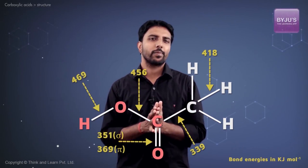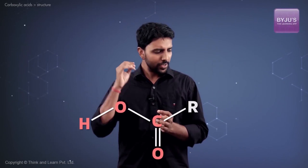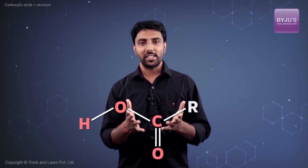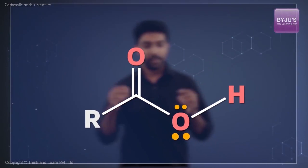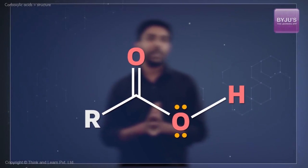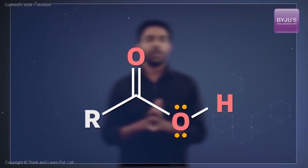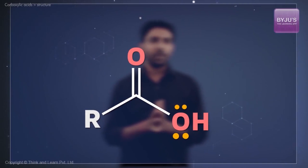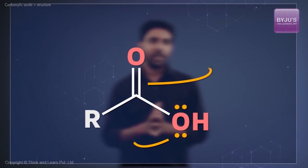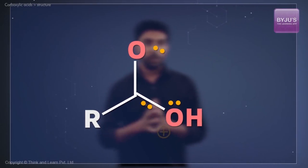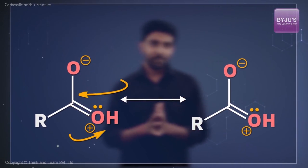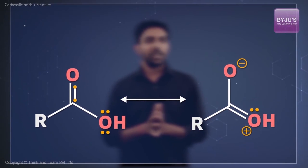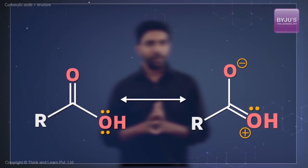But why? If you notice, we haven't shown the lone pair on this oxygen atom. What do we have here? A lone pair and then a single bond immediately followed by the carbonyl pi bond. So there is the possibility of one of the lone pairs moving in while the electrons from the carbonyl pi bond move to this oxygen atom. We are familiar with this, which is called conjugation, and it does impart a partial double bond character to this OH bond.